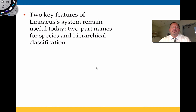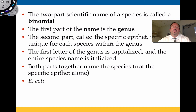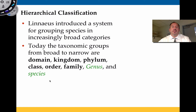The key features of the Linnaeus system remain: a two-part naming system and a hierarchy of classification — binomial nomenclature. The first part is the genus and the second is a specific epithet unique to each species within that genus. The genus is always capitalized and the species name is italicized. For example, Escherichia coli, or E. coli. The hierarchy goes all the way up: domain, kingdom, phylum, class, order, family, genus, and species — from broad down to most specific.